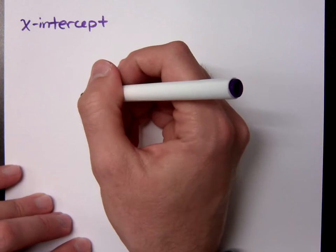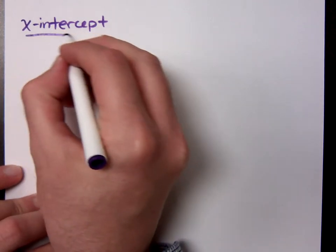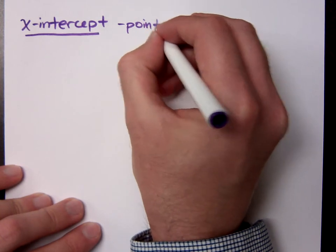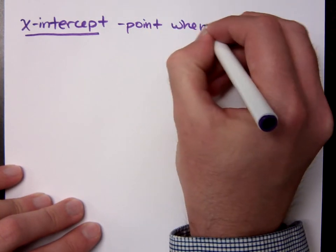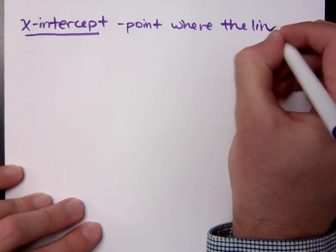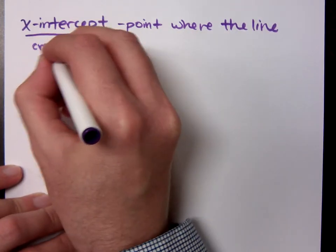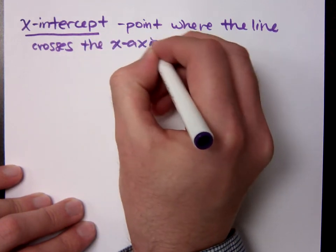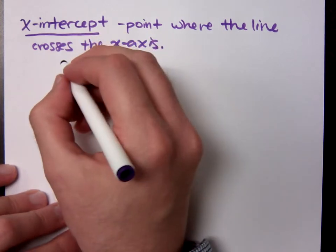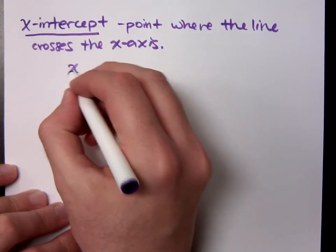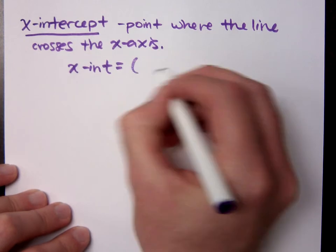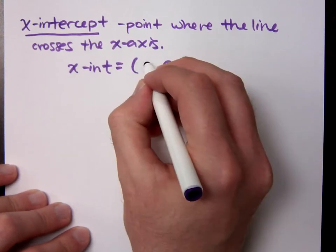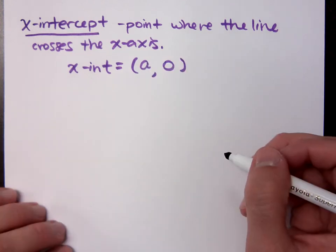Let's talk about the x-intercept. What does it mean to be an x-intercept? This is the point where the line crosses the x-axis. This is going to happen when y is equal to 0. So every x-intercept is of the form A, 0.